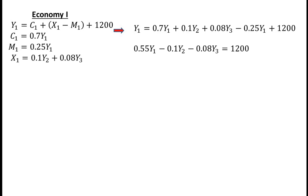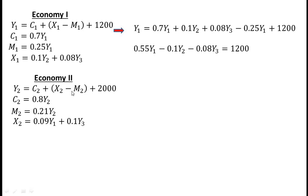0.55Y1 minus 0.1Y2 minus 0.08Y3 is equal to 1200. This equation is obtained after substituting the values of C1, M1, and X1 in national income equation Y1 of economy 1. Similarly, in economy 2 we get this equation.